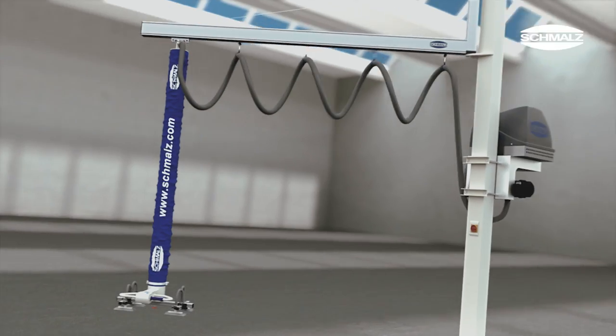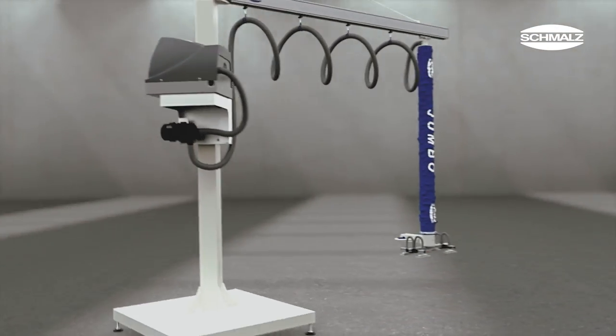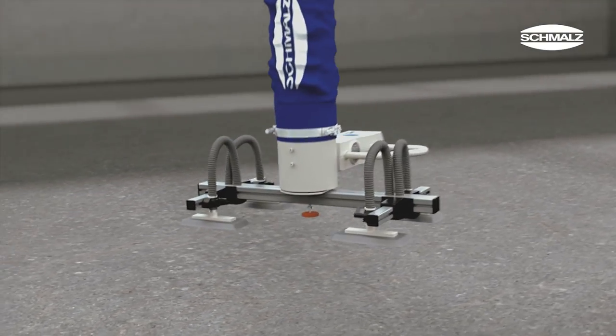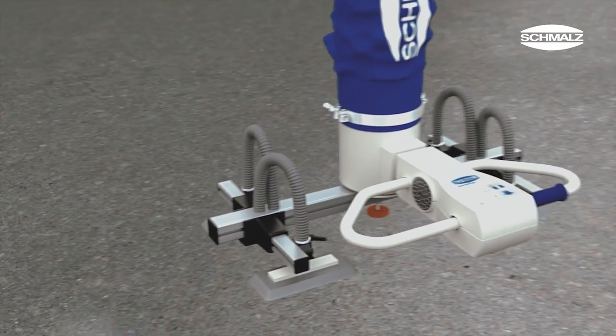The tube lifter Jumbo Ergo allows ergonomic handling of heavy and bulky loads without putting strain on the workers back. The Jumbo Ergo is used mainly for the loading or unloading of machines and for moving and stacking in different logistic areas.